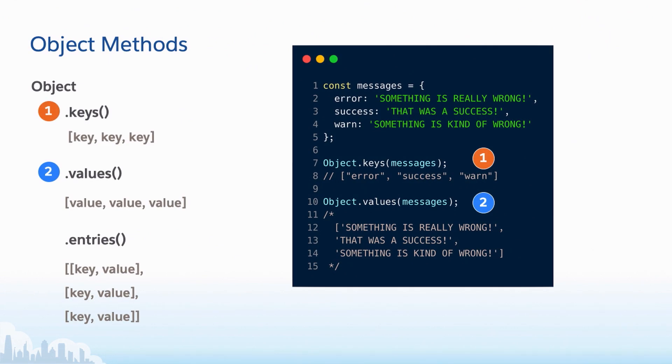So moving on to object methods. Typically, if you have to do some work on an object or do some changes on it, you can use one of these three methods to set your object up to create an array from parts of your object, and then iterate on it to make some changes. Object.keys, that will create an array of keys from your object. Object.values will create an array of values from your object. Object.entries will create an array of what are called tuples, so just key value pairs for each thing in that object. I've marked 1 and 2 here, since that's what's represented in our code examples.